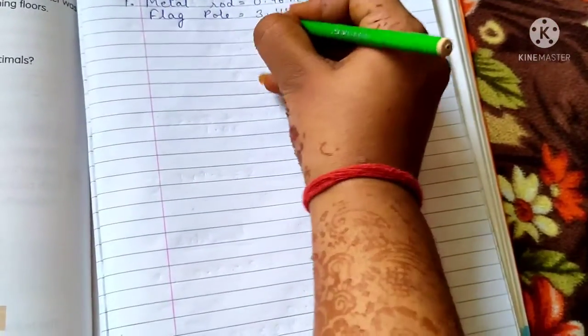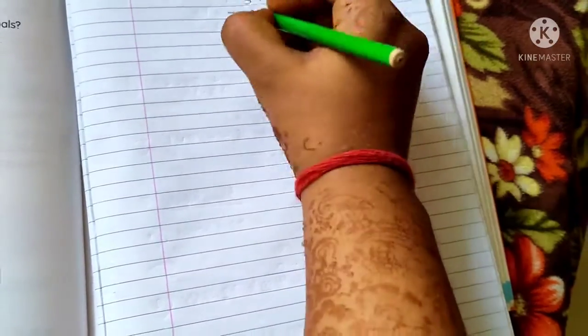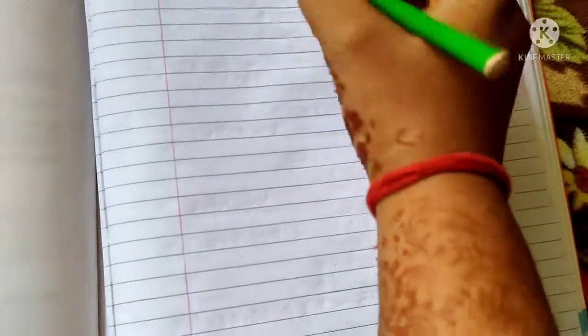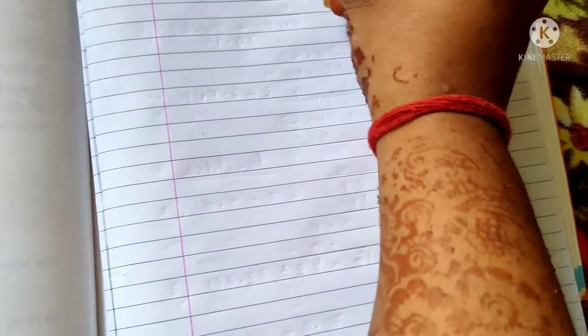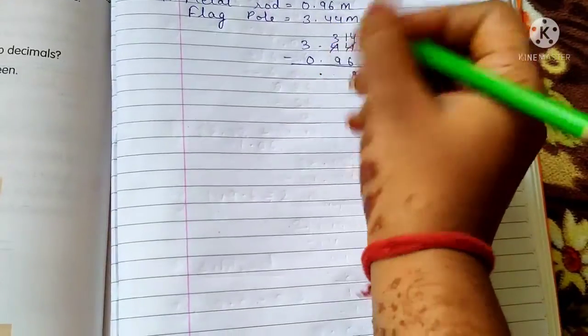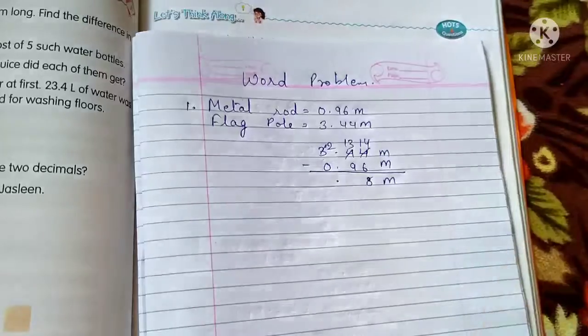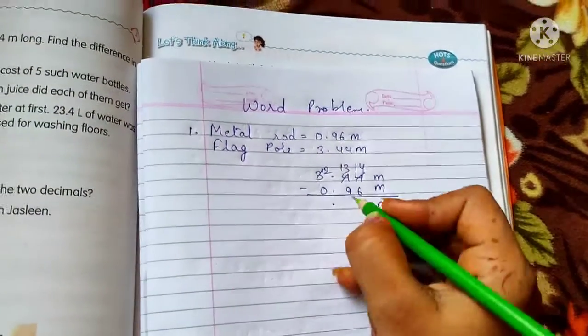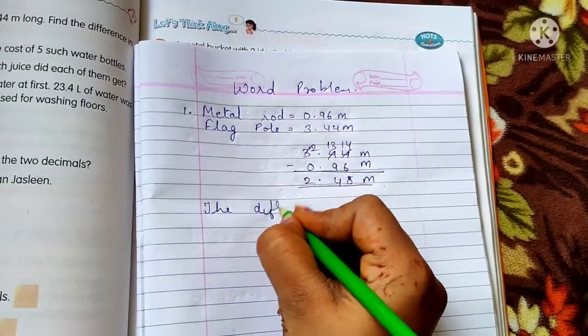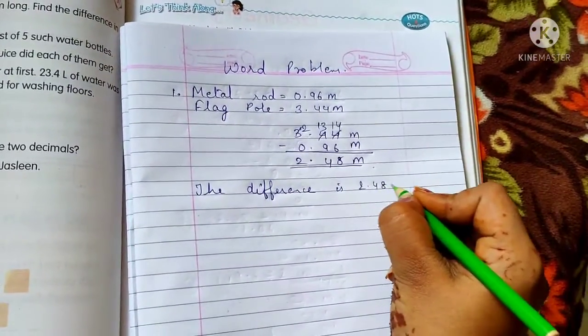Okay, so what we will do? 3.44 is bigger, so 3.44 minus 0.96. The length unit is meter, so meter and point will be same. Now 4 minus 6 is not possible, so we will take one carry from here. So here 14 will come. 14 minus 6 is 8. 3 minus 9 is also not possible, so we will take carry from here. So here 2 will come, making it 13. So 13 minus 9 will be 4 and here 2. So the difference is 2.48 meter.